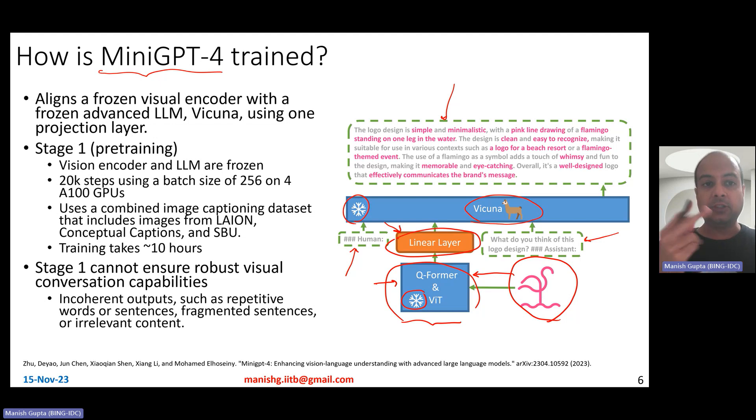So it sort of aligns a frozen visual encoder along with the frozen LLM using one projection layer, one projection linear layer. So how's it trained? Well, it's trained in two steps. The first stage is pre-training, which I'll describe on this slide, and the second stage is fine-tuning, which I'll describe on the next slide. So while pre-training, you basically ensure that the visual encoder and the LLM are frozen. You just do 20K steps using a batch size of 256 on four A100 GPUs. These 20K steps take about 10 hours. That's it.